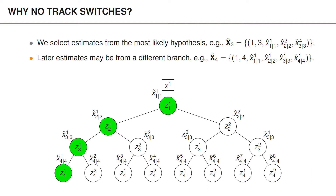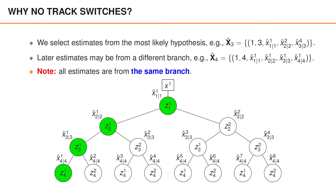Given later measurements, it's possible that the most likely hypothesis is from a completely different branch in the tree, for instance the green branch illustrated below. When that happens, we select our trajectory estimates from that branch in the tree. In this case, the sequence of state estimates in the trajectory would be x̂(1|1,1), x̂(2|2,1), x̂(3|3,1), and x̂(4|4,1). The key difference compared to the delta GLMB algorithm is of course that all estimates are from the same branch, which enables us to avoid unreasonable switches.